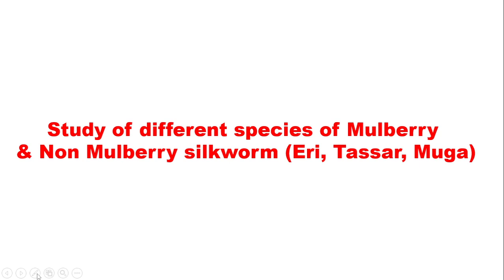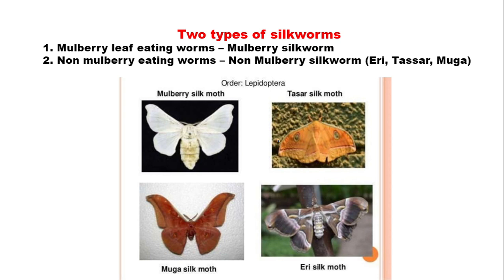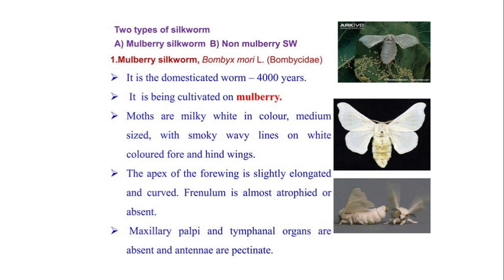Good morning, dear students. In this lecture we are going to discuss the study of different species of mulberry and non-mulberry silkworms. There are two types of silkworms: mulberry leaf-eating worms, known as mulberry silkworms, and non-mulberry leaf-eating worms, known as non-mulberry silkworms — which include tazar silkworm, mooga silkworm, and eri silkworm.